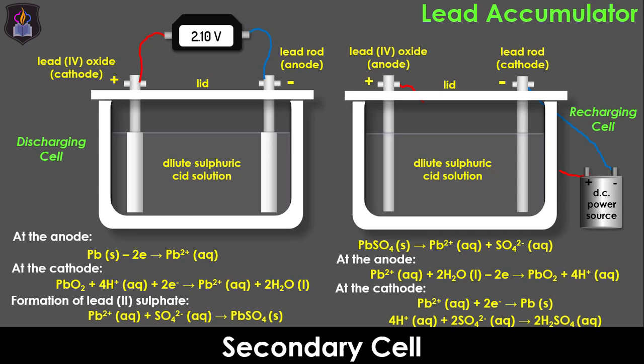It is important to note that a car battery is made up of 6 of these lead accumulator cells connected in series, hence the total output voltage of about 12 volts. Other secondary cells work based on similar principles.